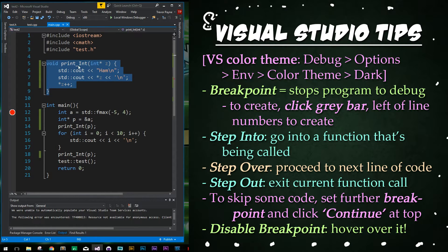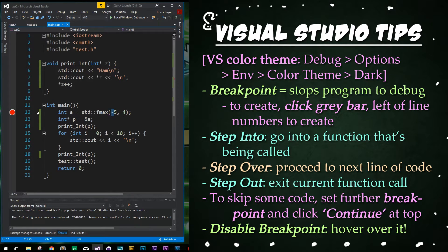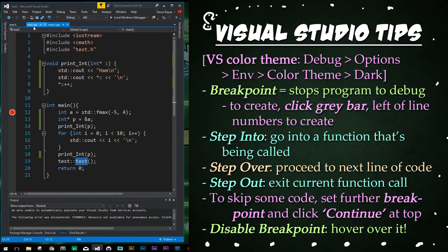It has a simple print_int function that's outputting 'ham' and whatever int we're passing in through the pointer, ending with a newline and incrementing that int value. Then below that we have our main function, where we create our int and use fmax. fmax is just to show what happens when you dive into a function that isn't in one of your files — it'll give us four. Then we create our pointer, call our print_int function, run a simple loop that counts one to ten, another call to print, and finally a call to the function defined in another file.